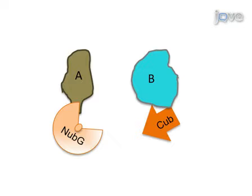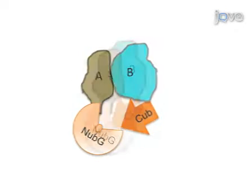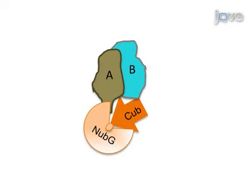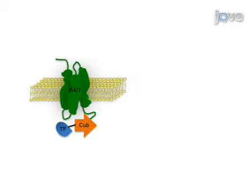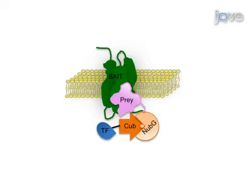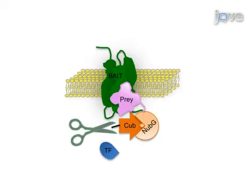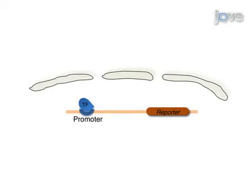If the NUBG and CUB are fused to protein A and protein B respectively, and A and B are capable of interaction, then the pseudoubiquitin molecule can once again be formed. In MYTH, integral membrane baits are fused to a tag consisting of the CUB fragment linked to an artificial transcription factor, while preys are fused to the NUBG fragment. An interaction between the bait and prey leads to reconstitution of the pseudoubiquitin, which can be recognized by cytosolic deubiquitinating enzymes, illustrated as scissors. These enzymes cleave after the C-terminus of CUB, releasing the transcription factor, which can then enter the nucleus and activate a reporter system, allowing for selective isolation and identification of cells in which bait-prey interactions occur.